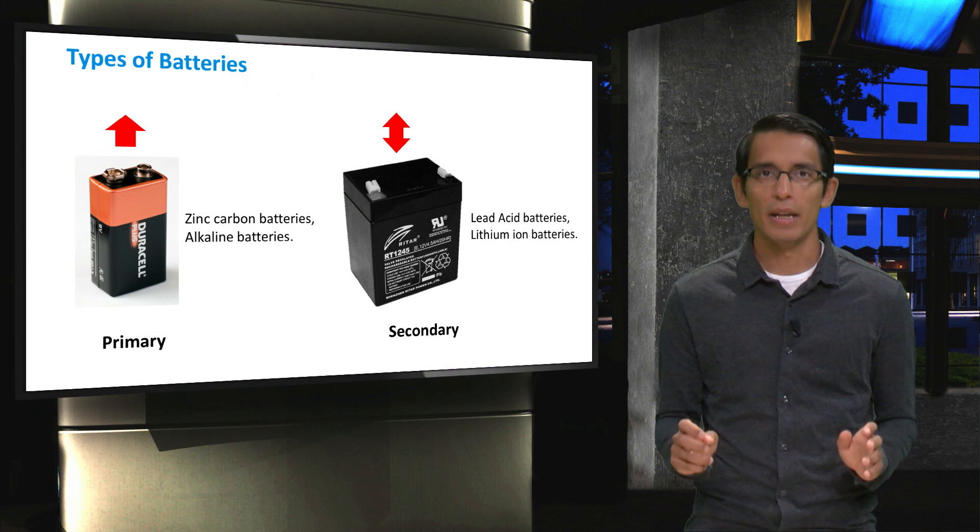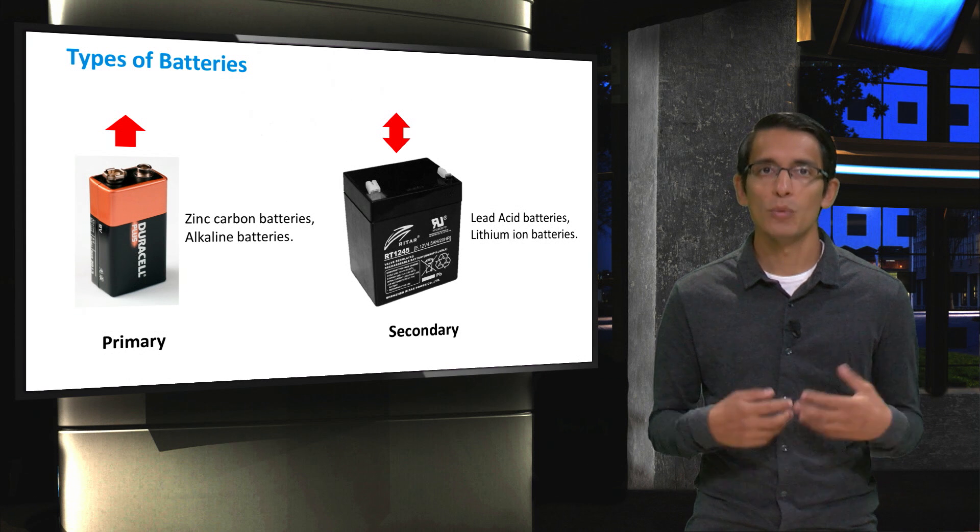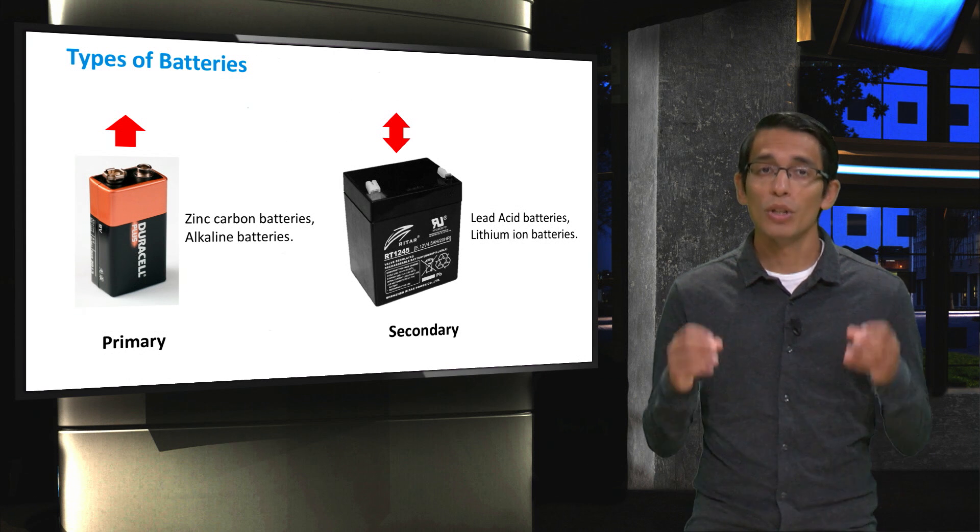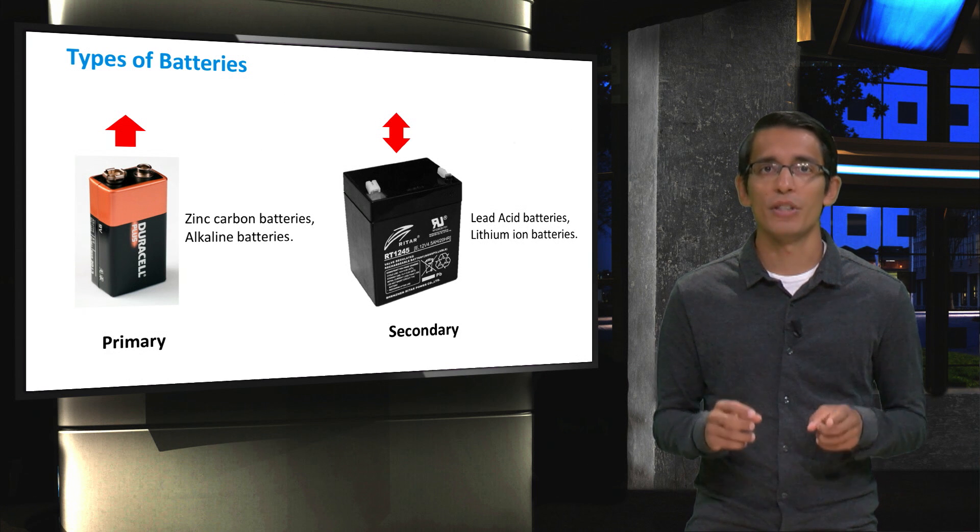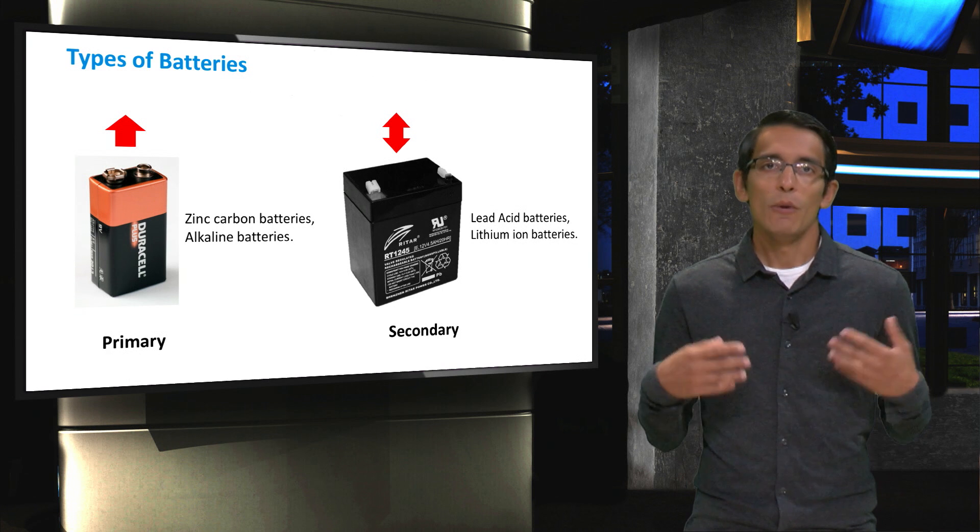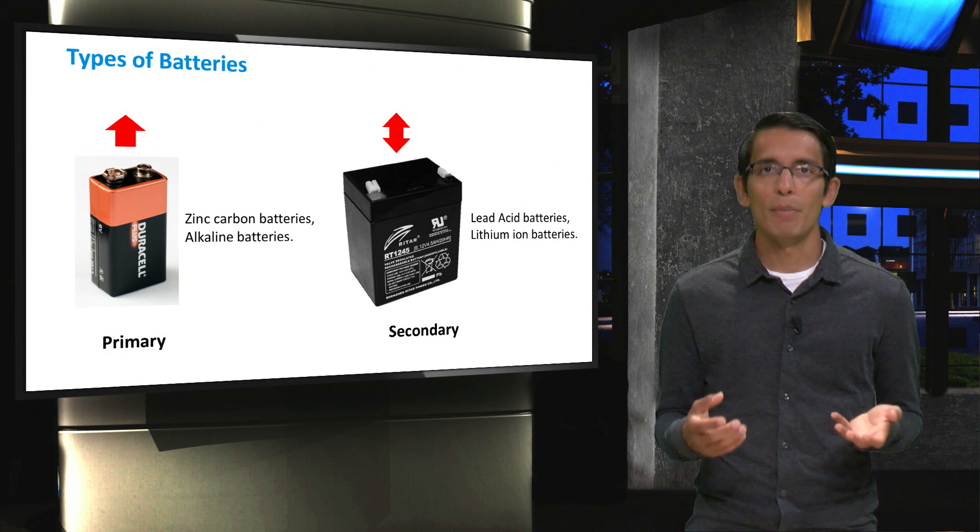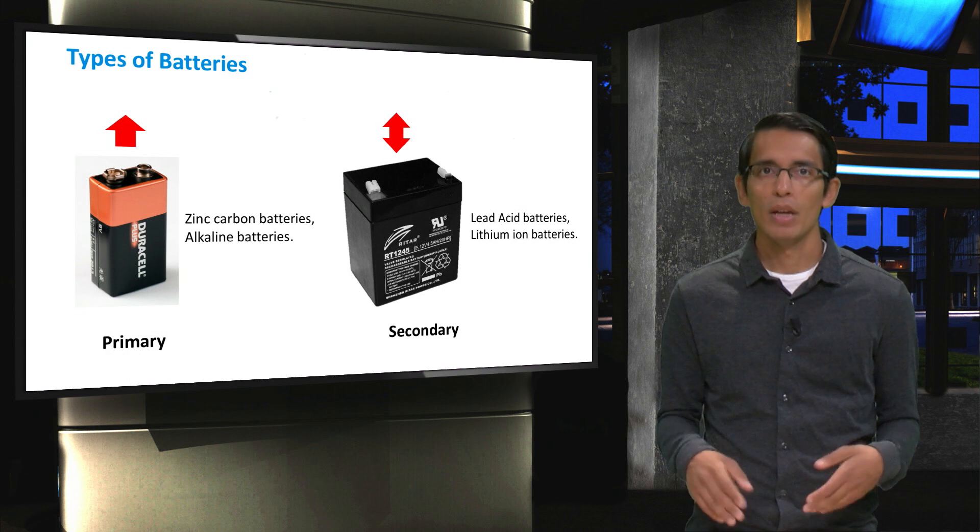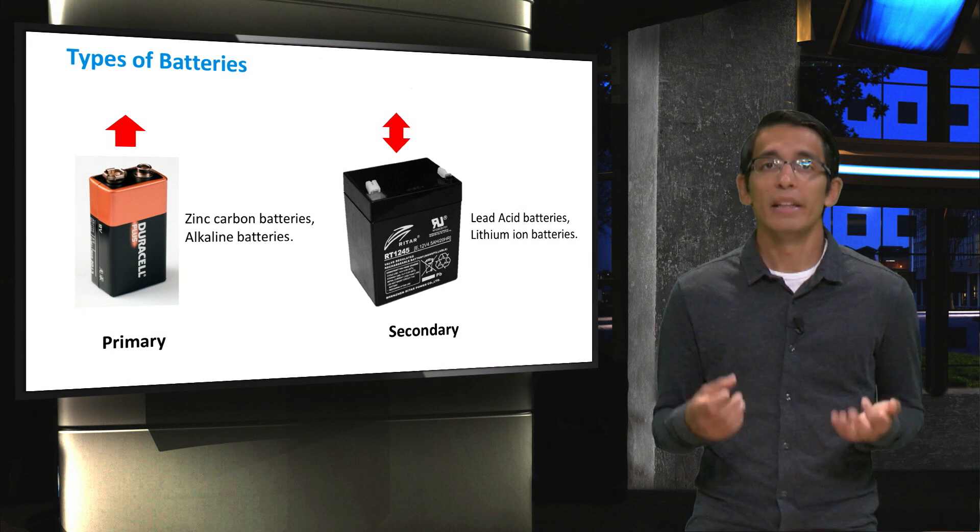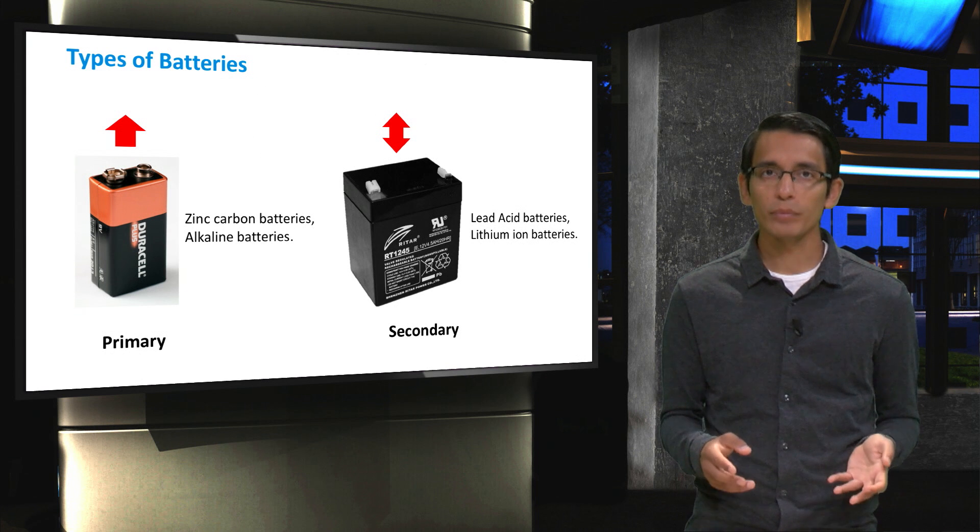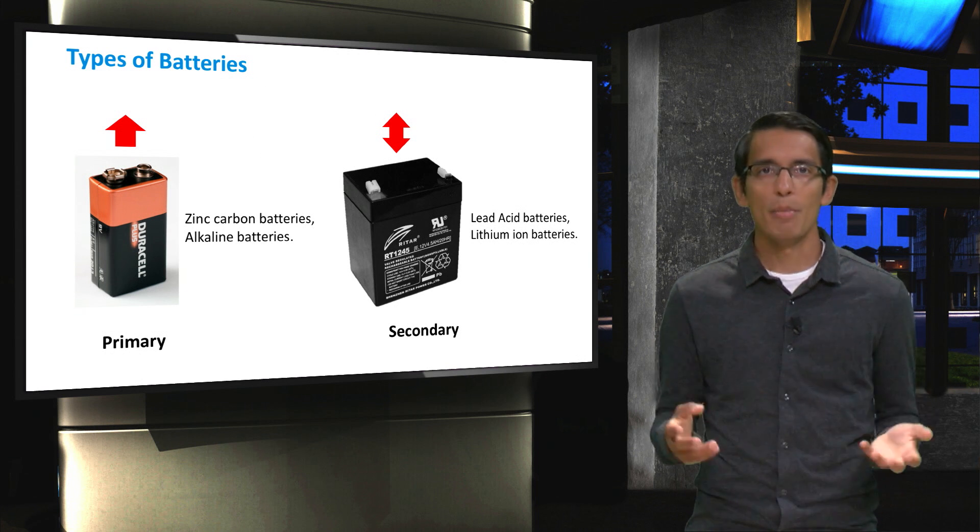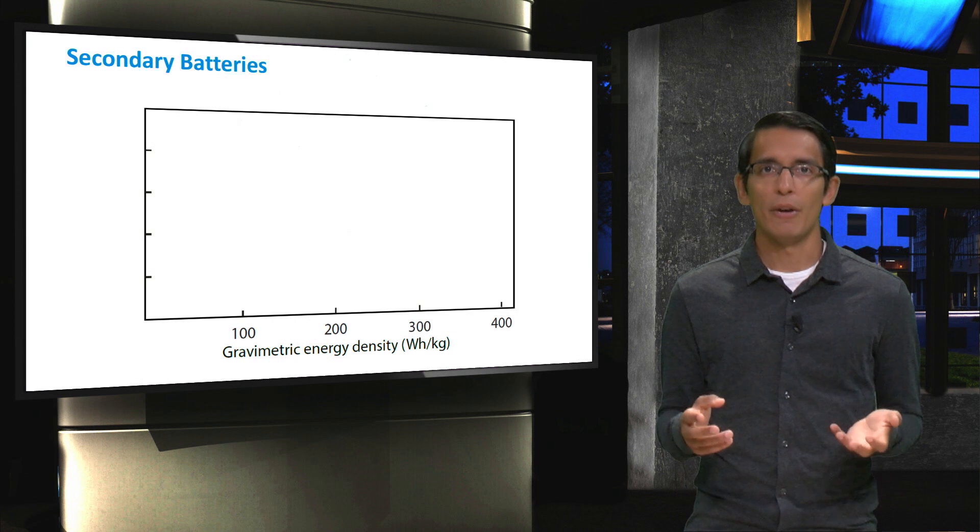Secondary batteries, on the other hand, take energy in as well. They are also called rechargeable batteries. These are only batteries of interest for PV systems. You are probably aware of a few secondary batteries such as lead-acid and lithium-ion batteries. Lead-acid batteries are commonly used in gasoline-powered cars, and lithium-ion batteries are used in cell phones and other consumer electronics. However, there are a number of other secondary batteries as well.